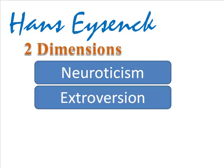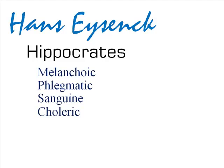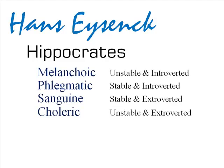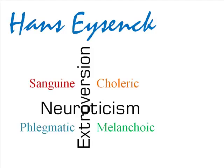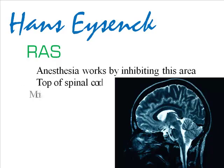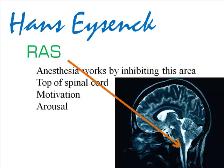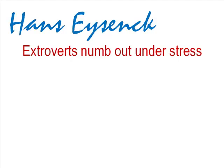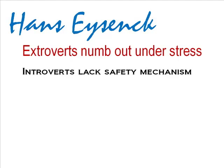For Eysenck, personality was more a matter of temperament than character. He revived the humors of Hippocrates but reformulated the four humors into two dimensions: extroversion and neuroticism. Extroversion is a reflection of your physiological makeup. He believed that your shy personality is the result of your brain being easily startled. Specifically, Eysenck targeted the ascending reticular activating system and the reticular formation of the lower brain stem. Introverts, according to this view, don't have the safety mechanism that extroverts do. When trouble comes, an extrovert's brain becomes numb and zones out. This inhibition process protects the brain from trauma. In contrast, introverts feel all the impact of the traumatic event and are overwhelmed by it.